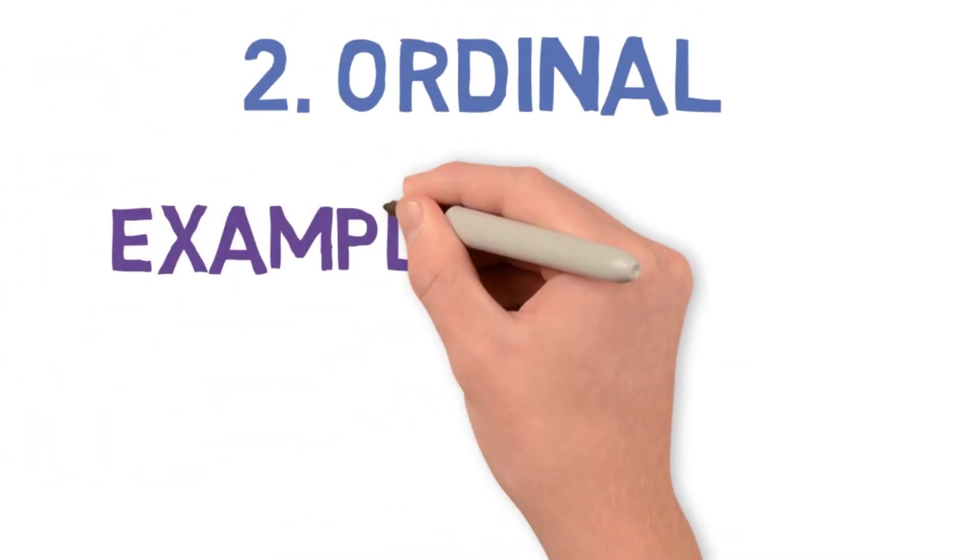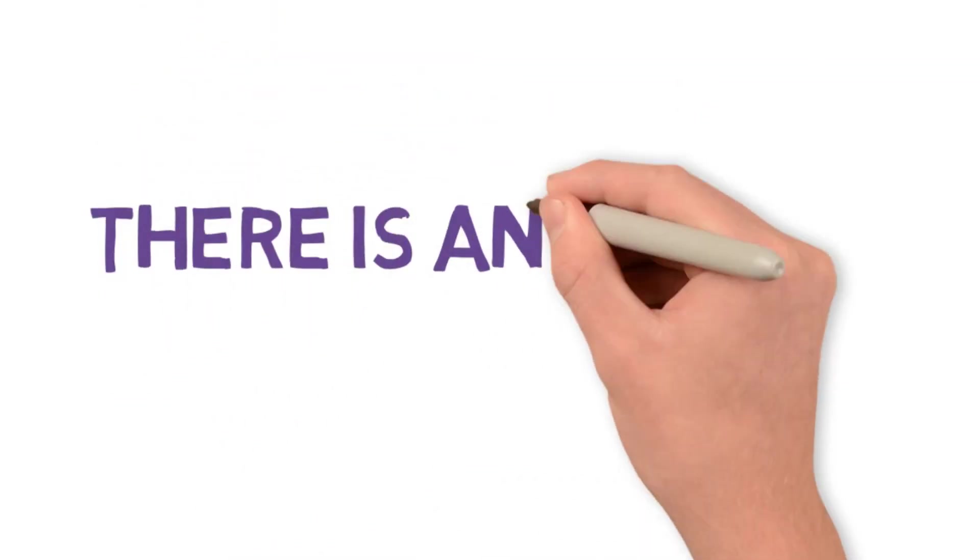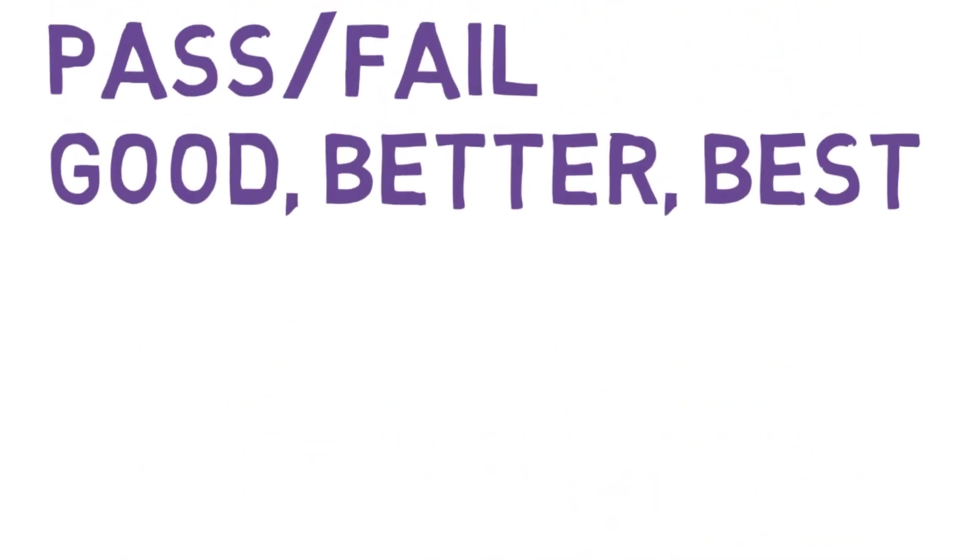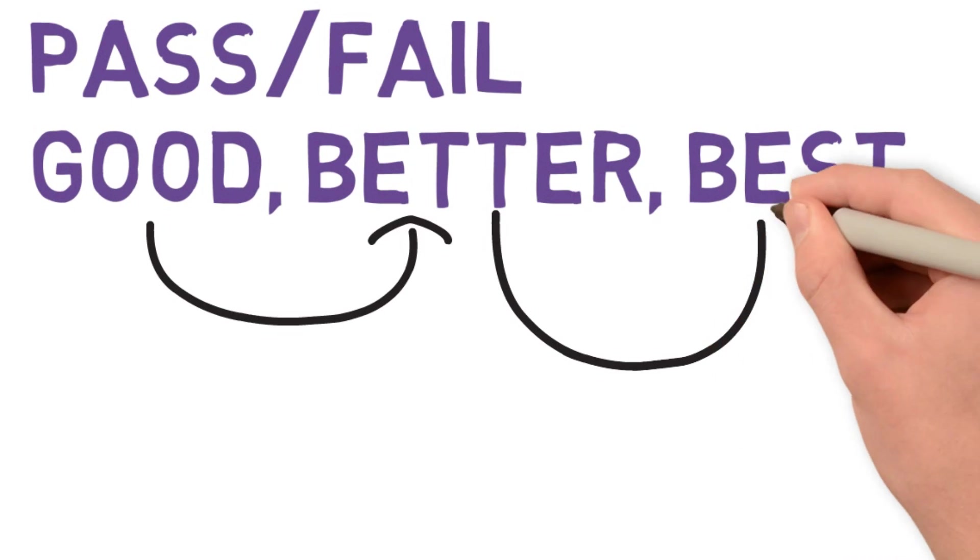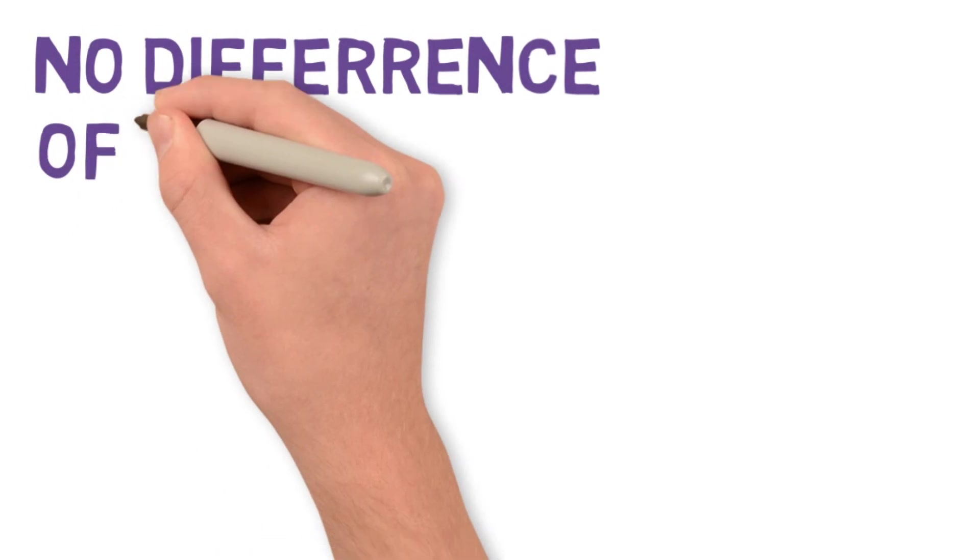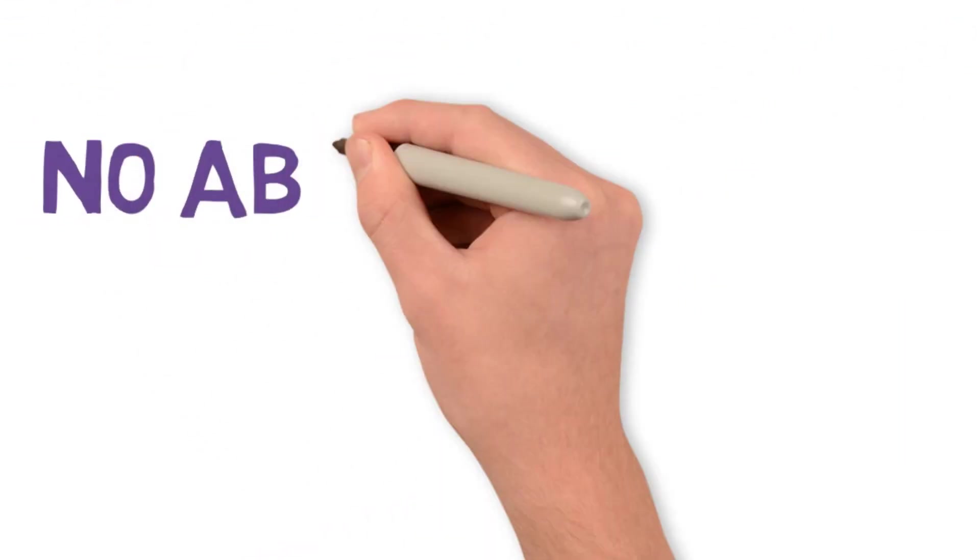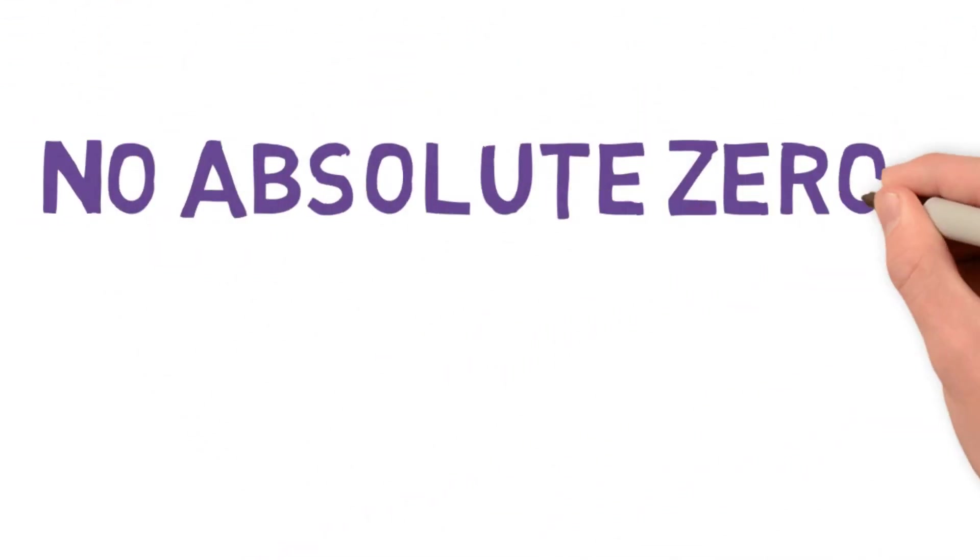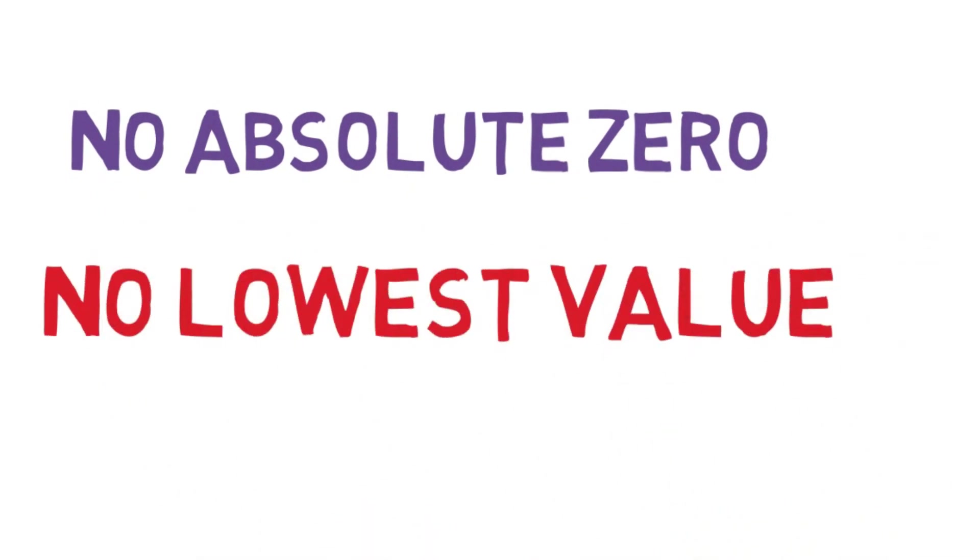The second type is ordinal data. For example, pass or fail, good, better, or best. There is an order. In this case, good comes first, then better, and the best. And again, no difference of values here. There is no difference between best minus good. No absolute zero. No lowest value in good, better, or best.